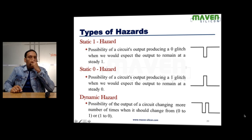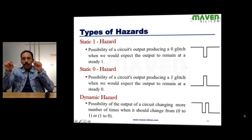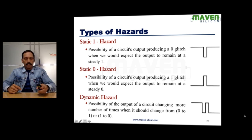Static 0 Hazard. We expect the output to be stable 0 but unexpectedly 1 glitch appears. Dynamic Hazard. We expect the output to change from 1 to 0 or 0 to 1 but it changes more than once. It's called Dynamic Hazard.